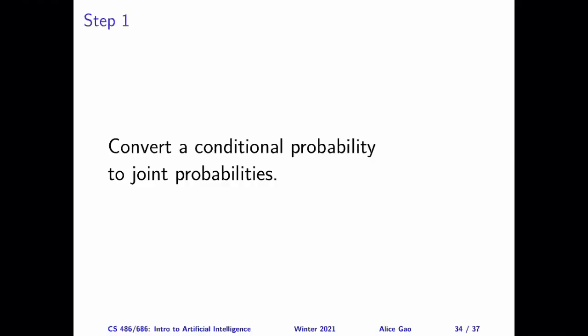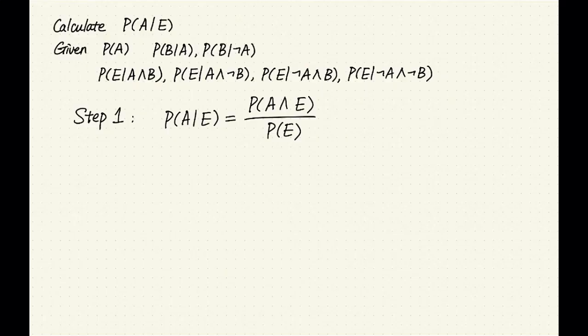Step one: take a conditional probability and convert it into several joint probabilities. We can do this by using the product rule in reverse, or by using a form of the Bayes rule. By applying the product rule in reverse, or the Bayes rule, we get the following expression. If we want to calculate the probability of A given E, it's equivalent to calculating two other quantities: the joint probability of A and E, and the probability of E.